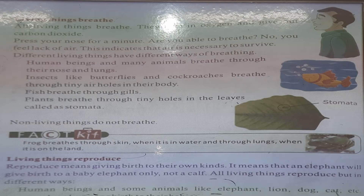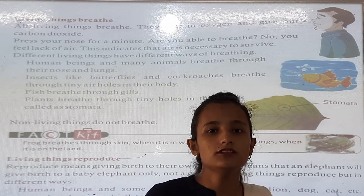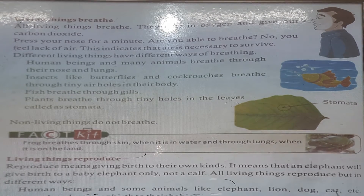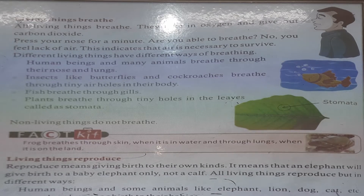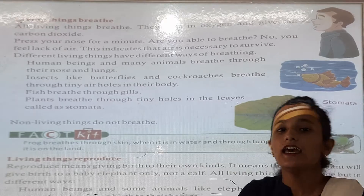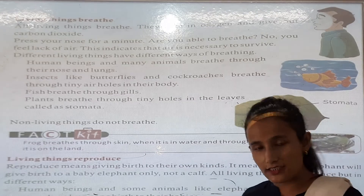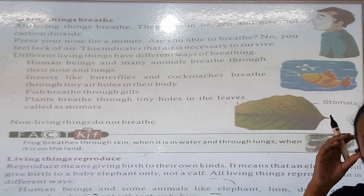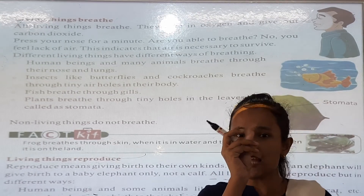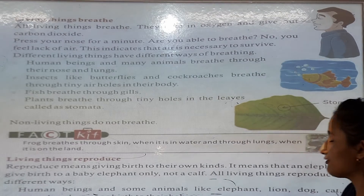Different living things have different ways of breathing. Fish, birds, animals, human beings have different ways of breathing. Human beings and many animals breathe through their nose and lungs. Insects like butterflies and cockroaches breathe through tiny air holes in their body. Fish breathe through their gills.